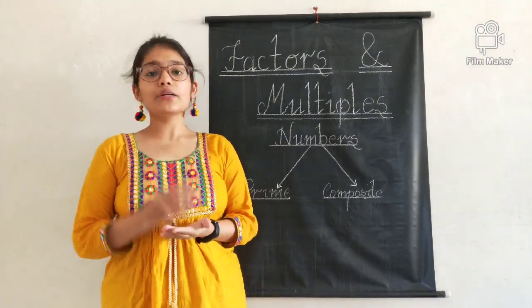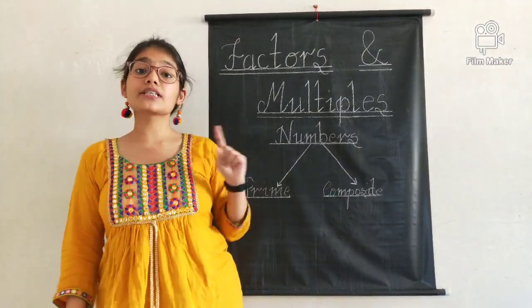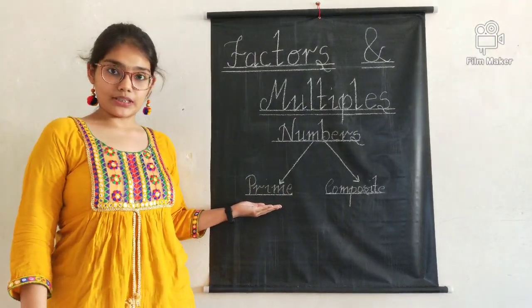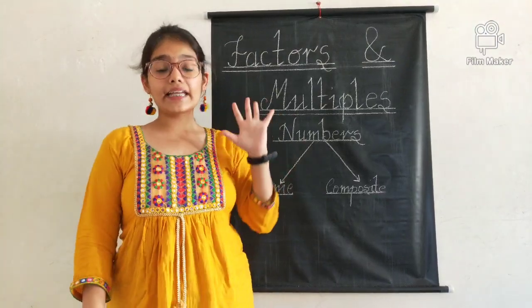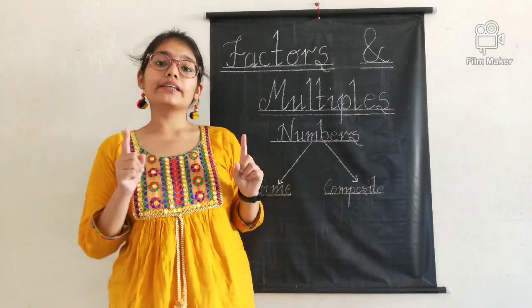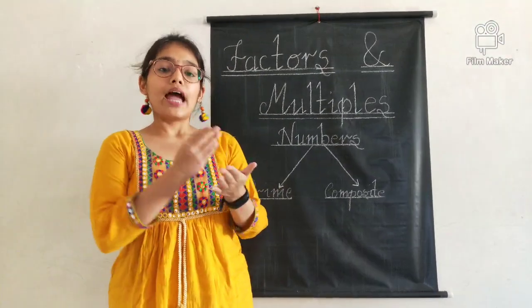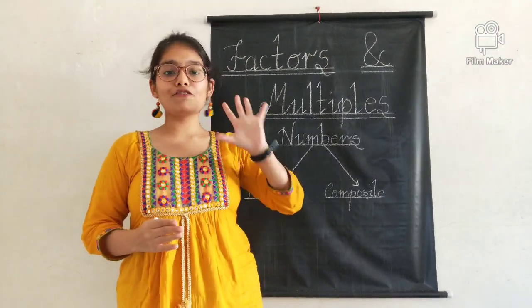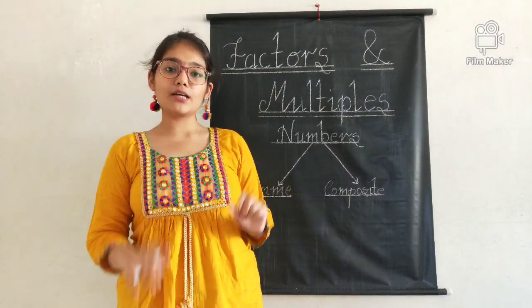For example, 6 can be written as 2 into 3, and both 2 and 3 are prime numbers. So all composite numbers are made by prime numbers — they are made of, or composed of, prime numbers. This is why they are called composite numbers.